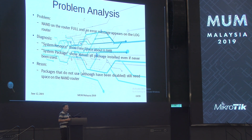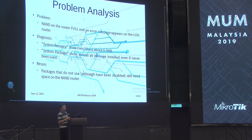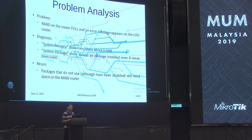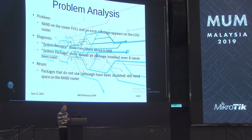Problem analysis: the flash on the router is full, and an error message appears in the router log. Diagnosis via system resource shows free space about half a megabyte or less. System packages show almost all packages installed, even if never used — such as IPv6, which most of us will not use, maybe for another 10 years. The reason: packages that are not used, although disabled, still need space on the router flash.